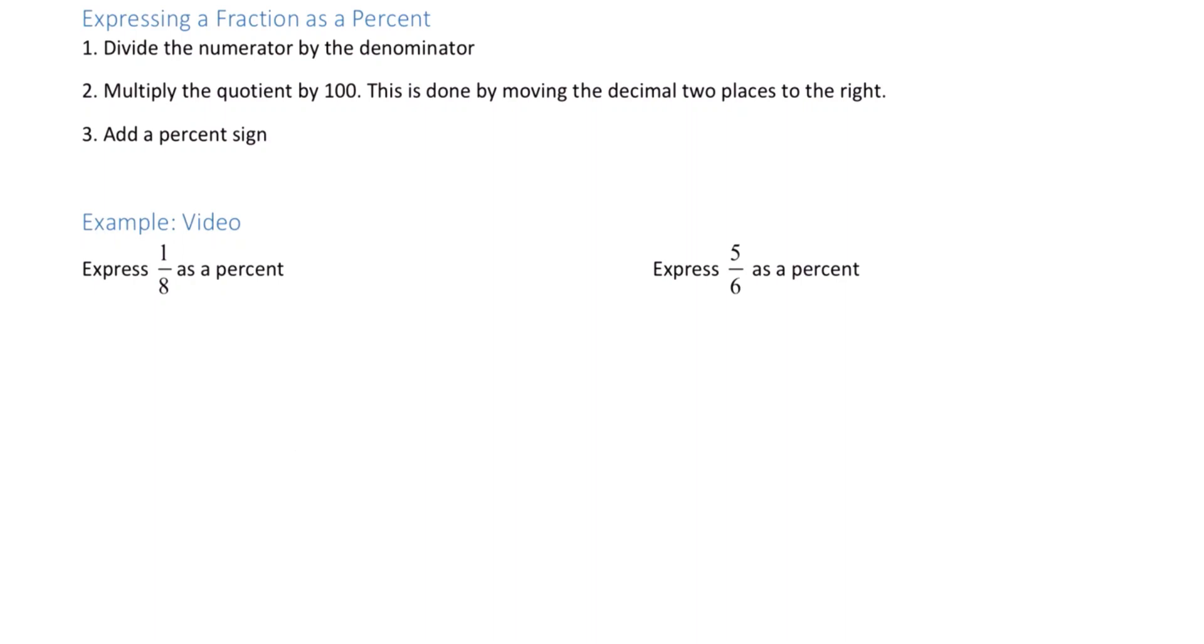To convert a fraction to a percent, we first divide the numerator by the denominator, multiply the quotient by 100, and add a percent sign.